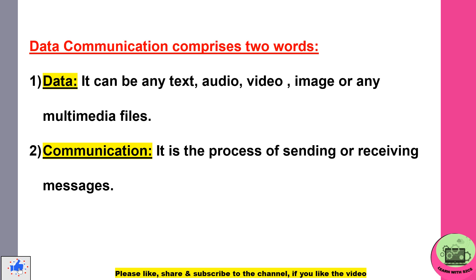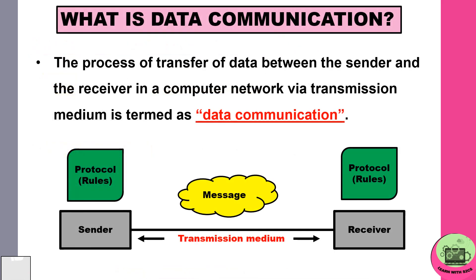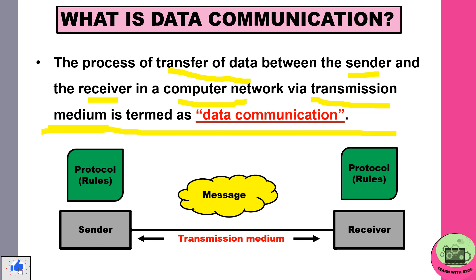Before understanding what data communication is about, you must understand these two terms. First is data — data can be any text, audio, video, or any multimedia files. Communication is the process of sending or receiving messages. So what is data communication? The process of transfer of data between the sender and receiver in a computer network via transmission medium is termed as data communication. You can see in the diagram itself how the data is transmitted between sender and receiver. They also have to agree to a set of rules known as protocol.